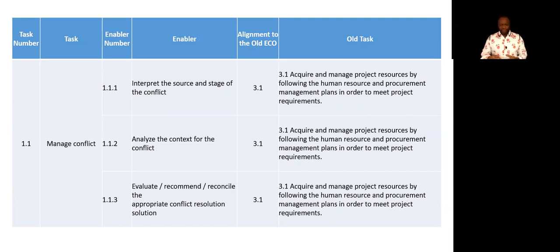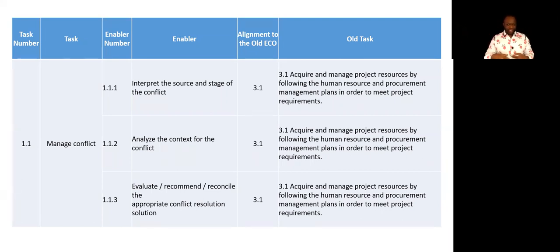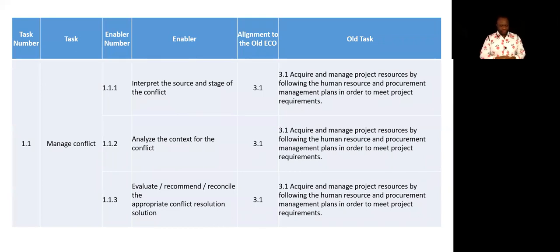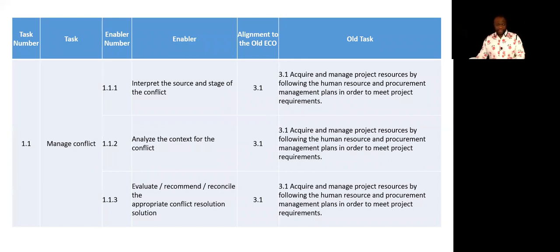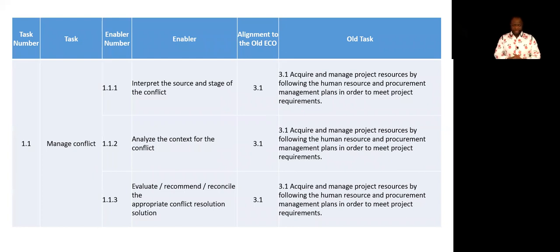Now, the way conflict is managed in the world of Agile is by team interaction and connecting people such that they're able to resolve those conflict issues themselves. And that is the job of the Scrum Master. That's why you need to be aware of the philosophies of Agile and Scrum as well.